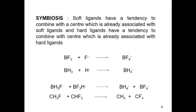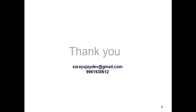One more term is symbiosis — soft ligands tend to combine with centers already associated with soft ligands, and hard ligands tend to combine with centers already associated with hard ligands. For example, BF₃ + F⁻ gives BF₄⁻, and BH₃ + H⁻ gives BH₄⁻. If BH₃F⁻ and BF₃H⁻ are mixed, they rearrange to give BH₄⁻ and BF₄⁻, which are more stable.